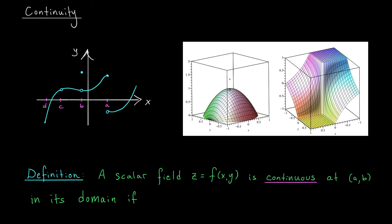For multivariable functions, the situation is very much the same. We can have discontinuities like the one at b, where the limit as we approach a certain point exists but just doesn't match up with the value of the function. We could also have discontinuities like at a, where the limit doesn't exist at all. Take this function, for example. If we approach (0, 0) from the lower part or from the upper part, we're going to get different values. So the limit doesn't exist, and the function is therefore discontinuous.